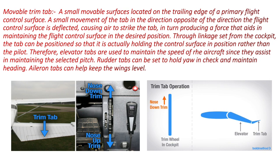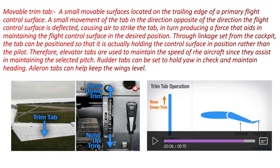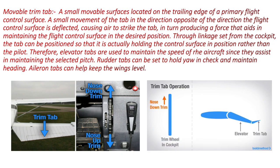Again, at nose down trim position, the trim tab moves up, the air strikes the tab, and the aerodynamic forces move the elevator down. By moving the elevator down, the nose of the aircraft moves down so that the aircraft maintains its level attitude.